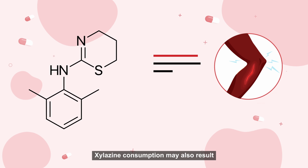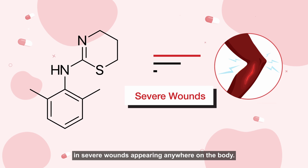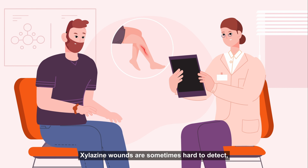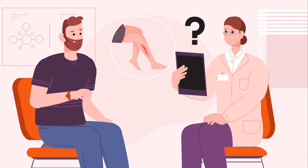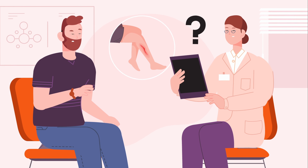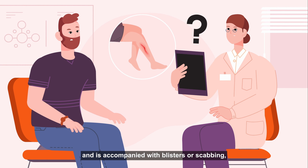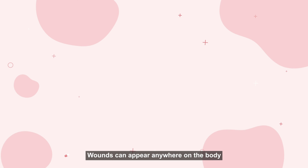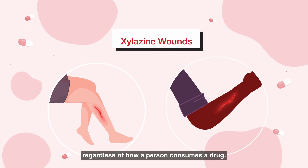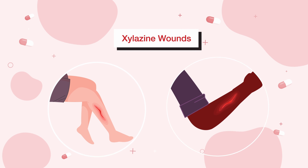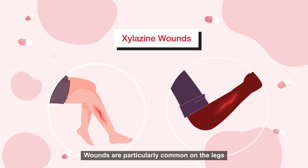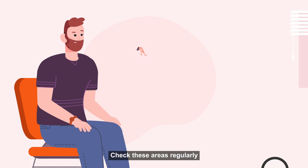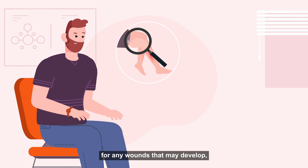Xylazine consumption may also result in severe wounds appearing anywhere on the body. Xylazine wounds are sometimes hard to detect; however, if an atypical wound appears and is accompanied with blisters or scabbing, it may be a Xylazine wound. Wounds can appear anywhere on the body regardless of how a person consumes a drug. Wounds are particularly common on the legs and arms. Check these areas regularly for any wounds that may develop.